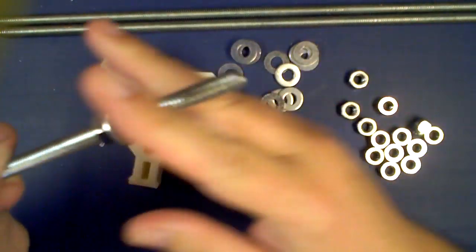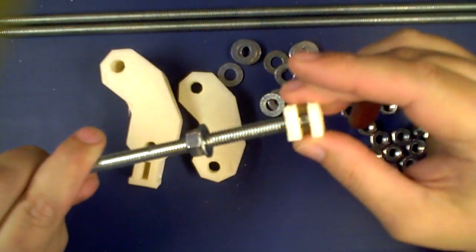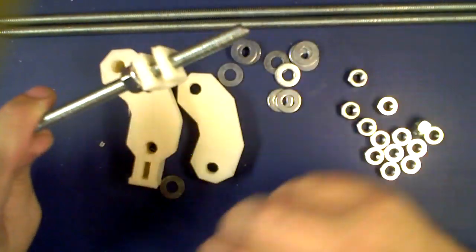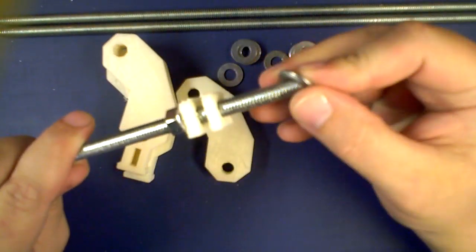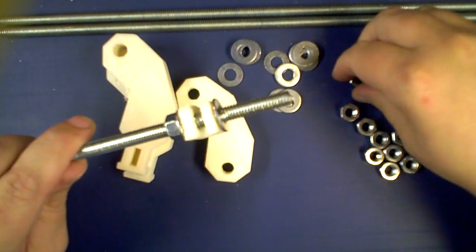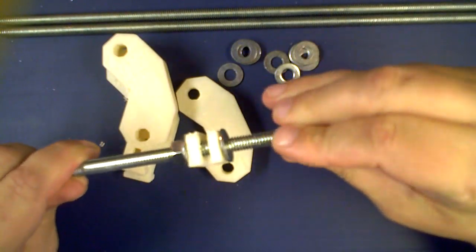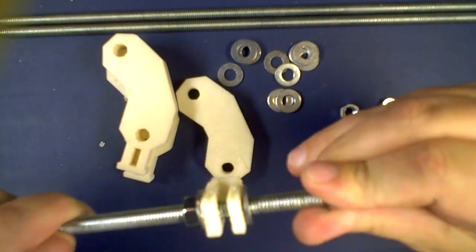What we're doing right here is attaching the clip for the long bar. Now for this assembly you're going to need your two tall vertexes and one of your non-legged vertexes.